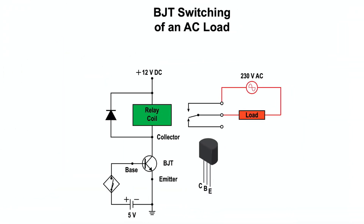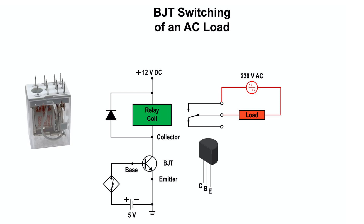Bipolar transistors cannot directly switch AC loads, and they aren't usually a good choice for switching higher voltages and currents. For these cases, a relay is used in conjunction with a low-power transistor. The transistor switches current to the relay coil, while the coil contacts switch current to the load.